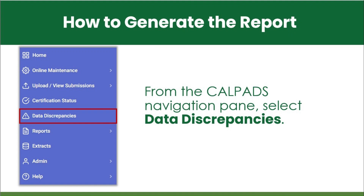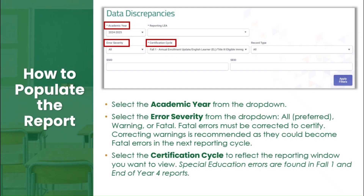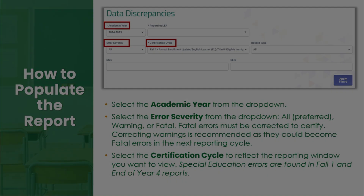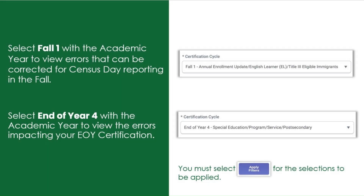Once logged into CALPADS, from the navigation pane on the left margin, select Data Discrepancies. Select the academic year, error severity, and certification cycle you wish to view. Best practice is to select all for error severity. Special education errors are found in Fall 1 and End of Year 4 certification cycles. Select the appropriate certification cycle you wish to view and click Apply Filters to generate the report.